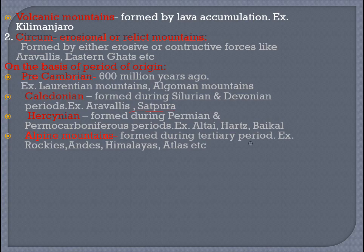Harsinian mountains were formed during the Permian and Carboniferous periods — examples: Altai, Harz, and Baikal mountains. Alpine mountains are the youngest, formed during the Tertiary period — examples: Rockies, Himalayas, and Atlas mountains.